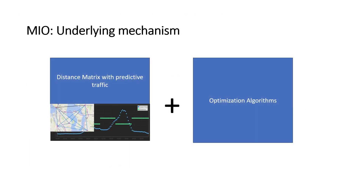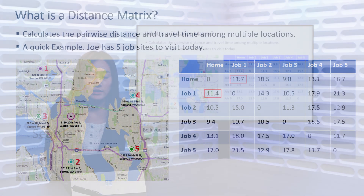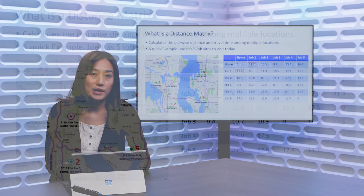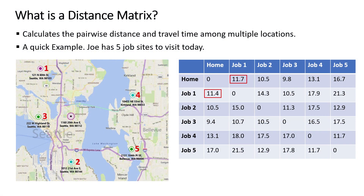The underlying mechanism of Multi-Itinerary Optimization API is the distance metrics with traffic and optimization algorithm we developed with Microsoft Research. Distance metrics calculates the pairwise distance and travel time among multiple locations. As shown in this map, Joe will leave home and have five worksites to visit today. The table on the right calculates the pairwise travel distance among his home and the five worksites. Note that the distance from home to job one may not be the same as the distance from job one to home. With the distance metrics, we can find the optimal sequence and route for visiting all the worksites.